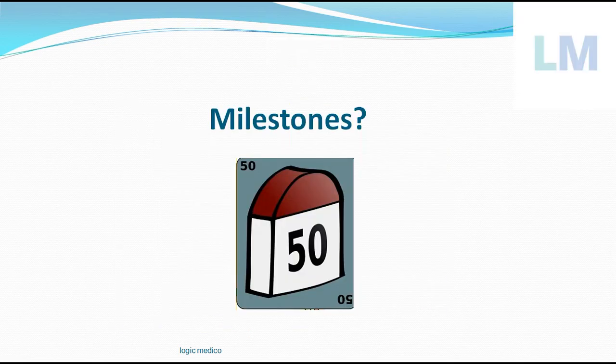Basically, a milestone refers to a stone which is placed on a highway, road, or railway which indicates the distance between two cities — for example, 50 kilometers between one city and the next. It is placed either in the median or by the side of the road. It is called a milestone because it is usually placed at an interval of a mile.